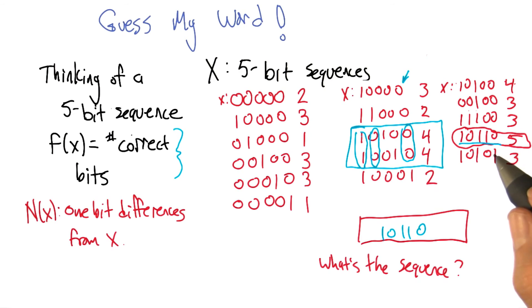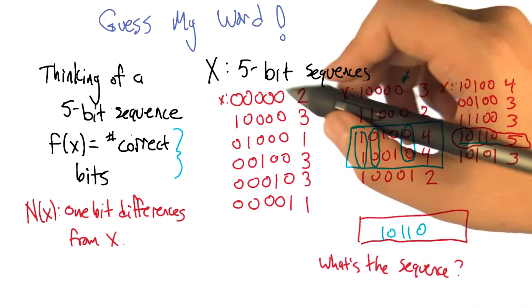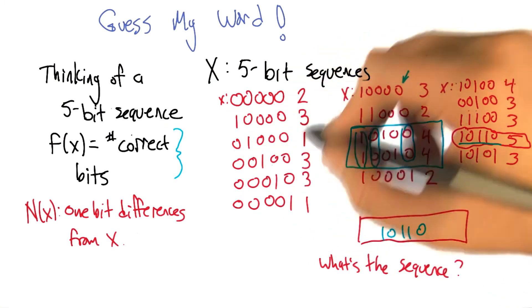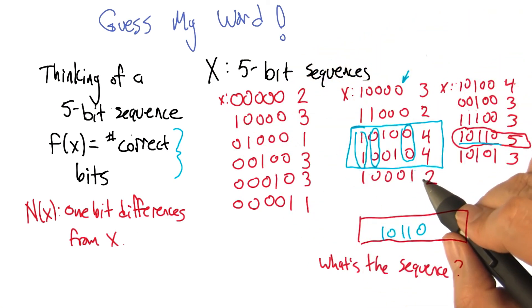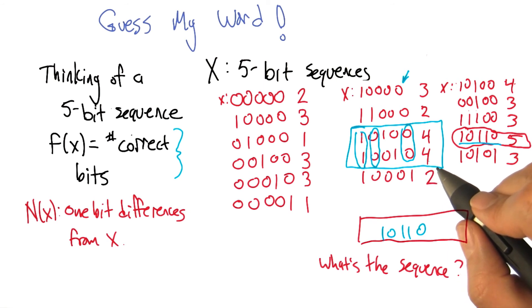But the rest of the algorithm was perfectly implementable without knowing that, right? All that you were basing your decisions on was, you gave me bit sequences, I gave you scores, and you used those to figure out what next bit sequence to ask. It didn't use the fact that the fitness function had a particular form. That's right.